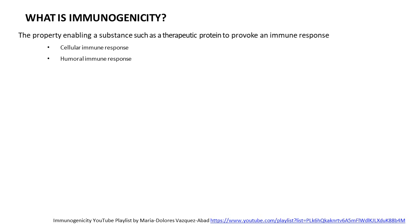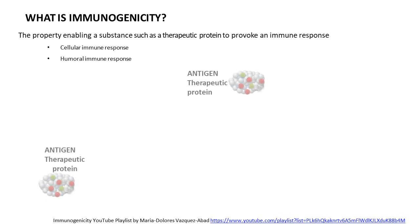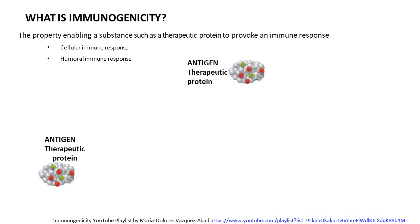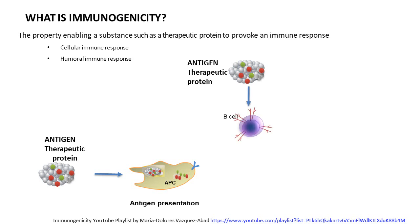Immunogenicity is a property that enables a substance, such as a drug, to provoke an immune response. When this response starts, we have the therapeutic protein or drug, which is presented or seen by an antigen-presenting cell — most likely a dendritic cell, although B cells can also act as antigen-presenting cells. These cells can see the whole protein, engulf it, and then present it to the T cell — but they don't present the whole molecule.